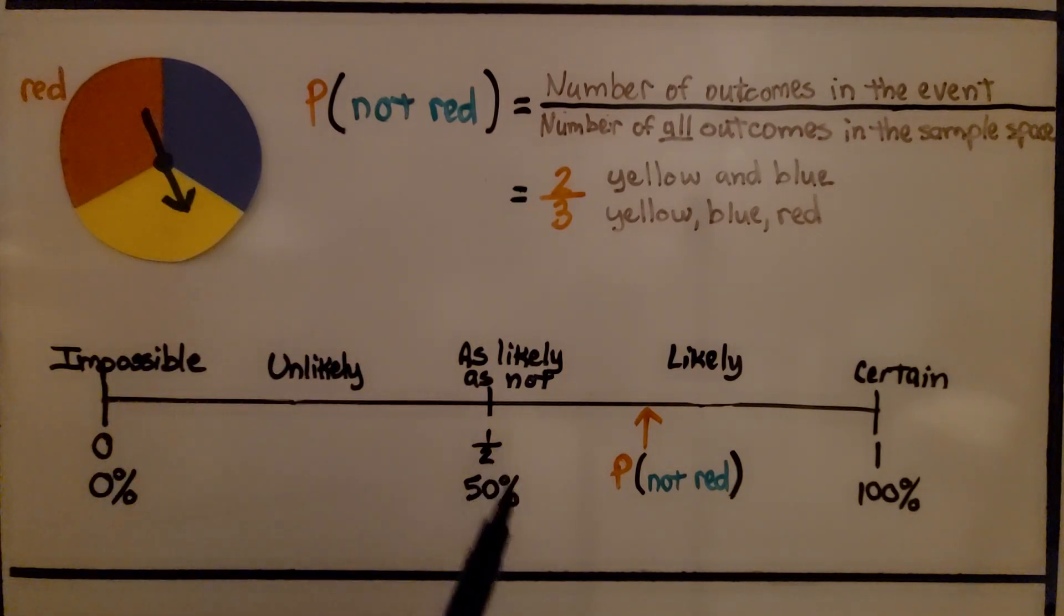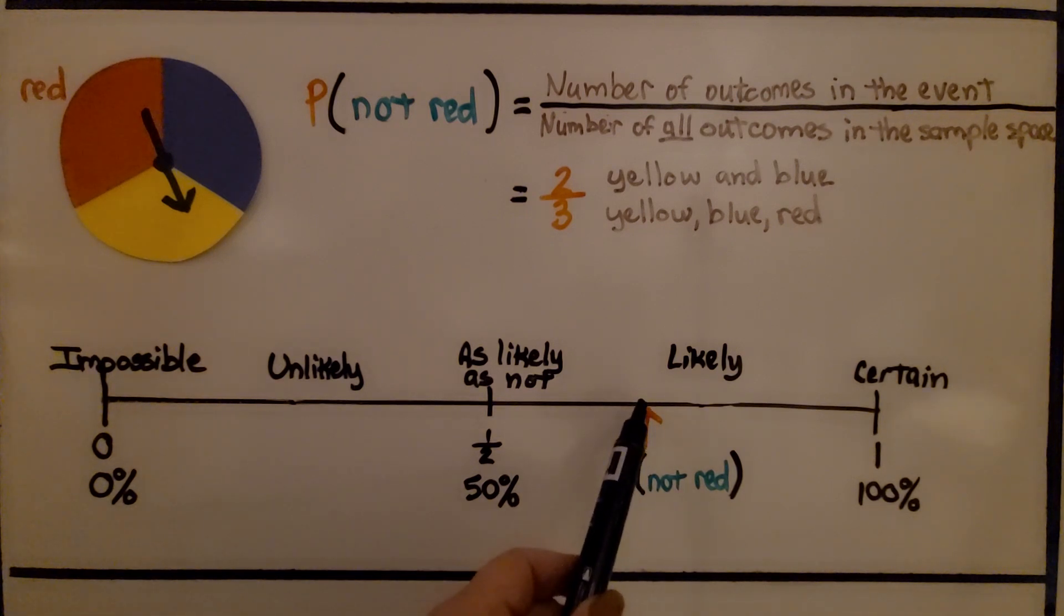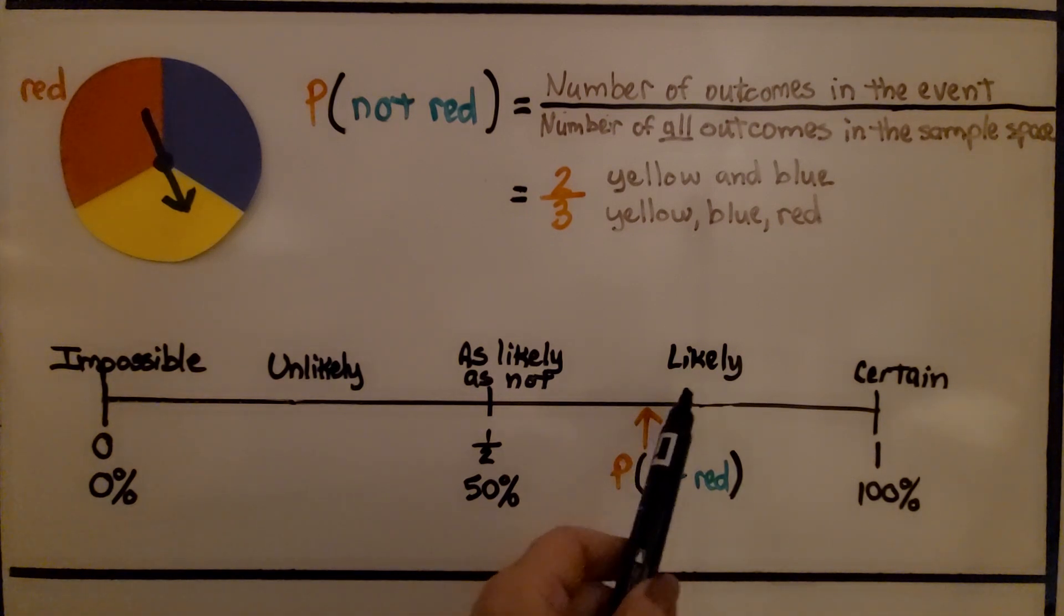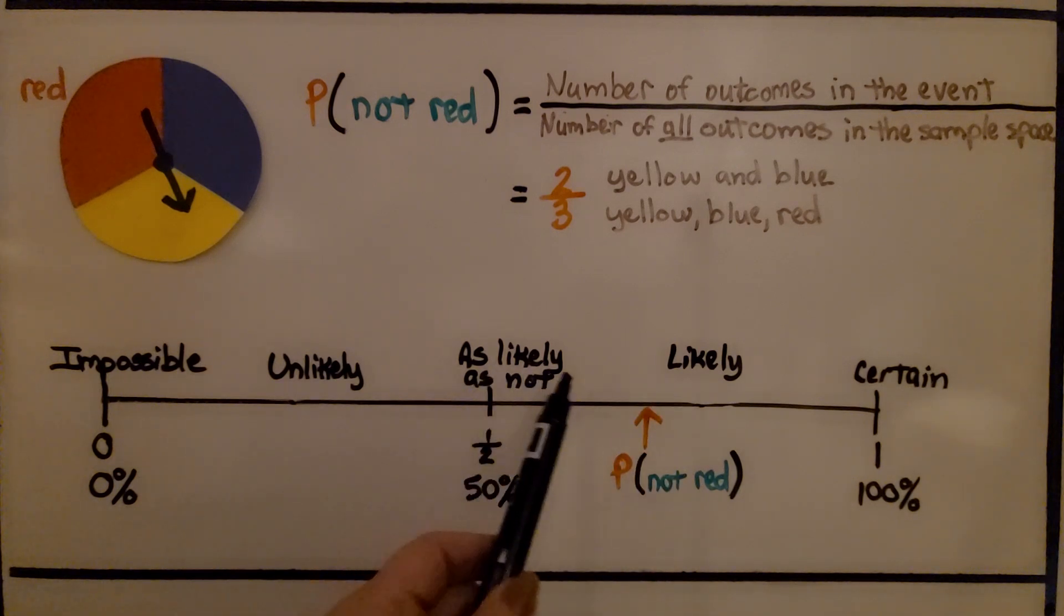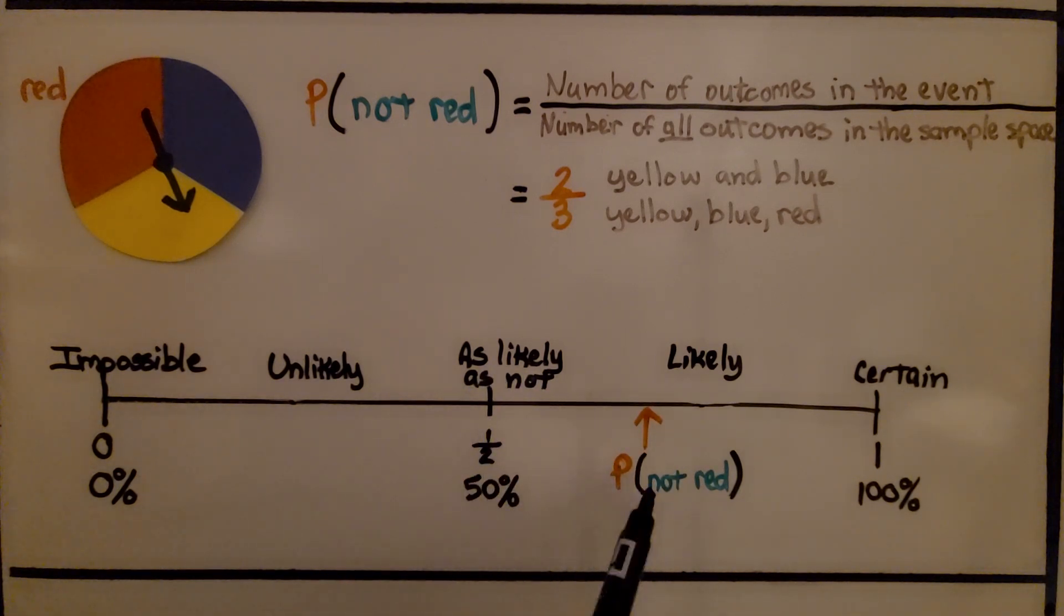On our number line, 2/3 would be about right here, and it would be very near likely, wouldn't it? It would be more than as likely or not. It's more than 50%.